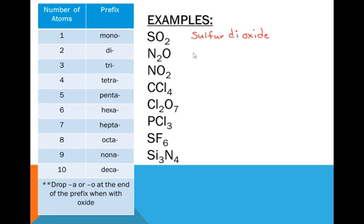And N2O. The first element is nitrogen. Second element is oxygen again, so we're going to say oxide. First element has two nitrogens, so we're going to say dinitrogen. The second element is going to be monoxide because the second element must have a prefix.